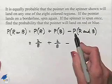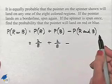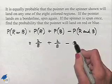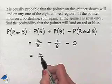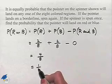And then we have a probability of being red and blue. And there are no regions that are red and blue. So that would be a zero. And now we can add together. We have four out of eight, or one half as our probability.